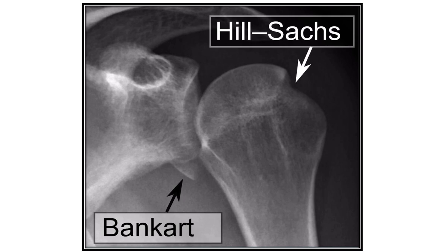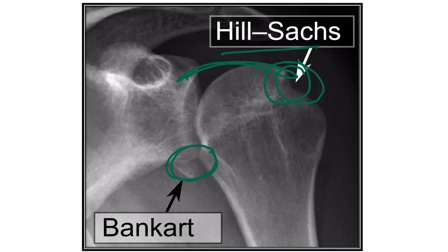In the case of a Hill-Sachs lesion, here we can see this is a lesion in the upper part of the humeral head. When there is a lesion in the upper part of the glenohumeral head area, it is known as the Hill-Sachs lesion. On the other hand, when it occurs in the inferior or lower part, it is called the Bankart lesion.